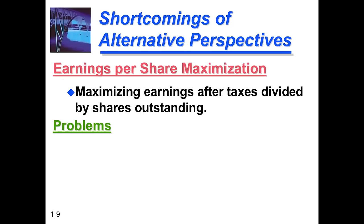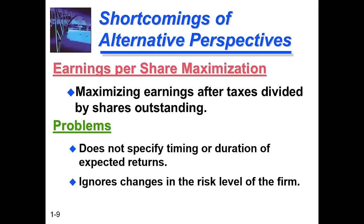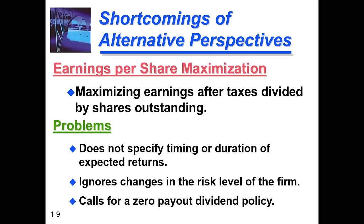Another alternative perspective is earnings per share maximization. The formula is: earnings after taxes divided by shares outstanding — this gives earnings per share. When maximization focuses on EPS, we face problems. First, we don't specify timing — the duration of expected returns is not given. Second, we ignore changes in the risk level of the firm, which is the same shortcoming as profit maximization — the risk level is ignored, which is not beneficial in the long term.